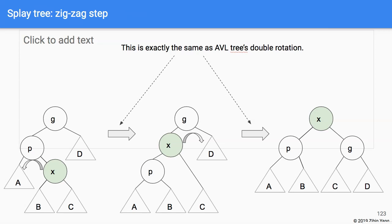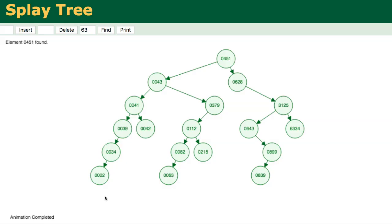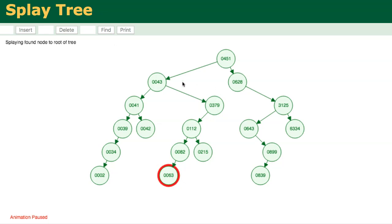To show how it actually works, let's use an algorithm visualization tool. Here is a tree that has been constructed. We'll try to do a find for the number 63. It follows the standard binary search tree traversal to find the node. Now that 63 is found, it will try to bring 63 up to the top. Since 63 has a parent and a grandparent, this is the zig-zig case.